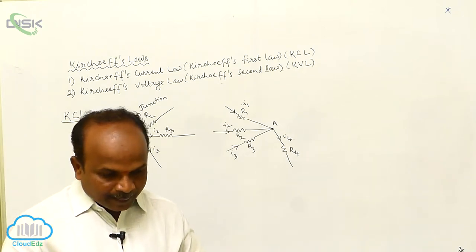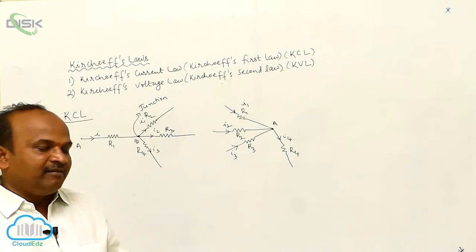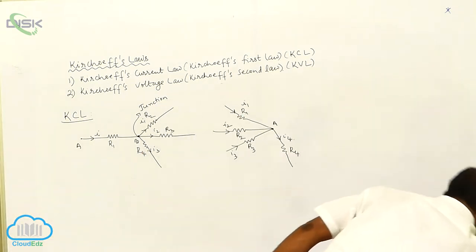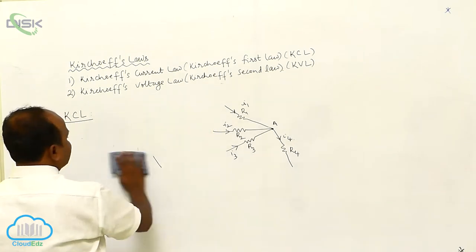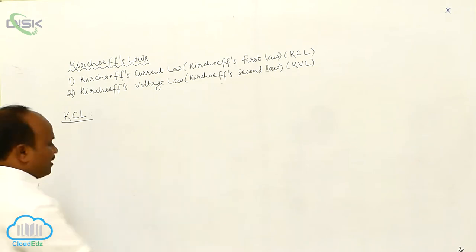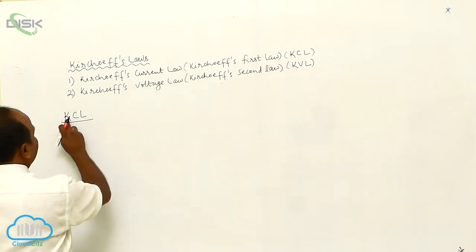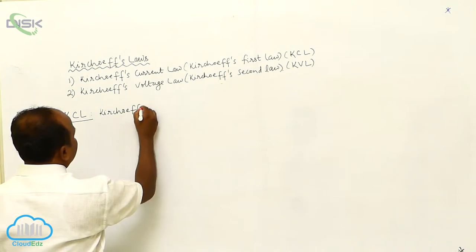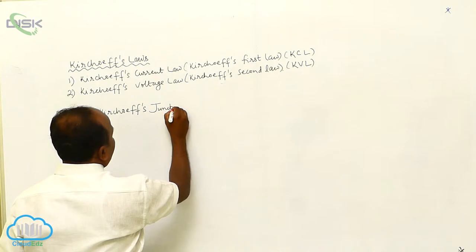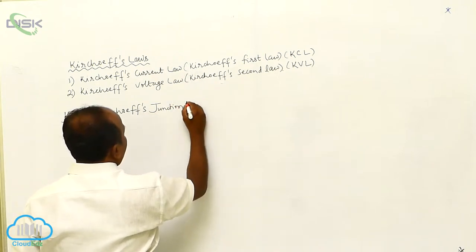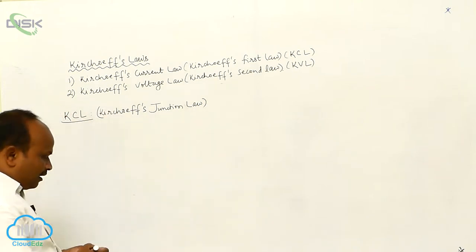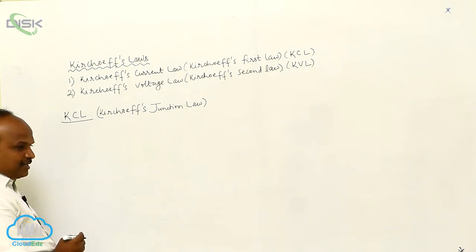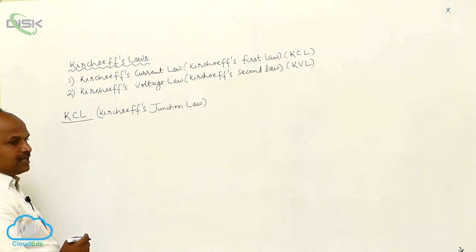Therefore, what is a junction? The point where the currents divide or combine is called a junction. Now, once you know the junction, what is the statement of Kirchhoff's junction law? Kirchhoff's current law is also known as Kirchhoff's junction law. The algebraic sum of currents at a junction is equal to zero.